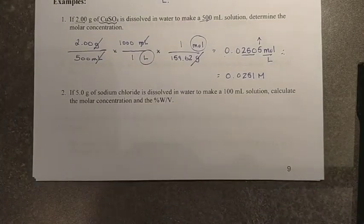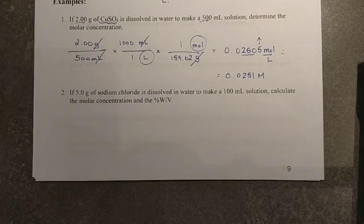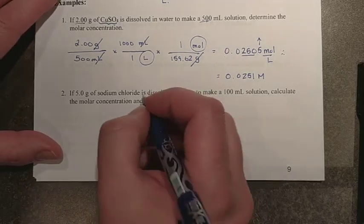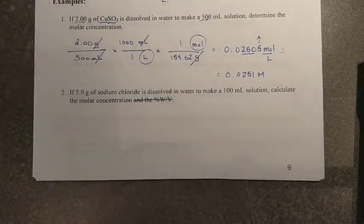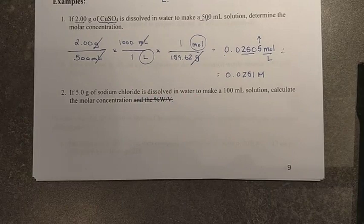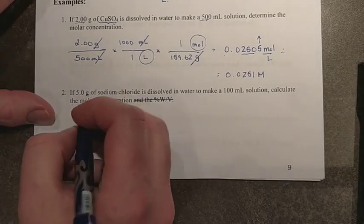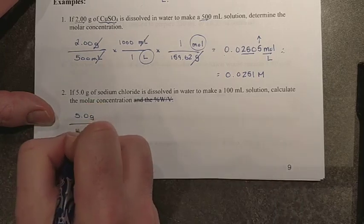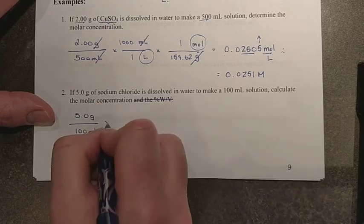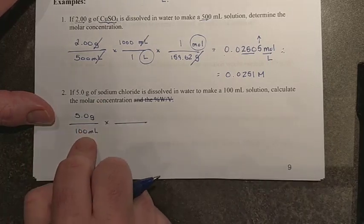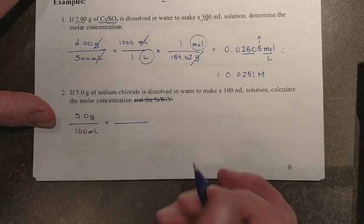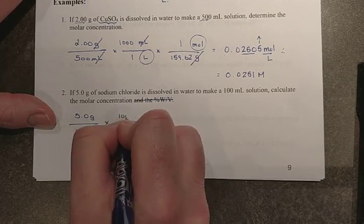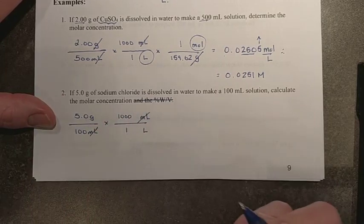Alright, on to the next one. I have five grams of sodium chloride dissolved in water to make 100 mL solution. Calculate the molar concentration and the percent weight by volume. I'm just going to do the molar concentration for this one, because that's what we're focusing on here with at-home learning. So the starting point is exactly the same. We have 5.0 grams. We have 100 mLs. So we'll convert that. There's your mLs. There's your liters. I have 1,000 mLs for every one liter. Now I have grams per liter.